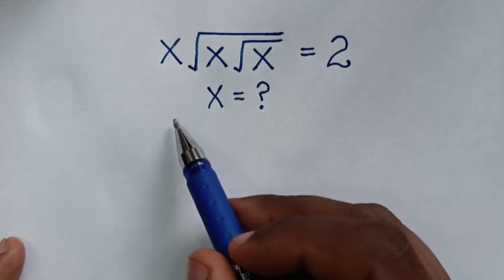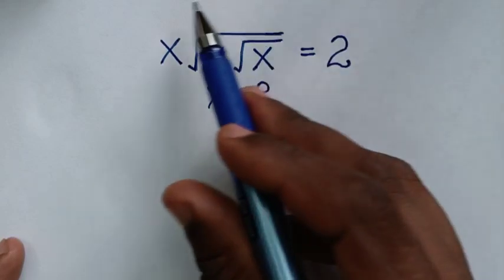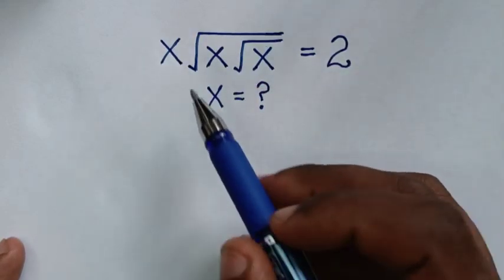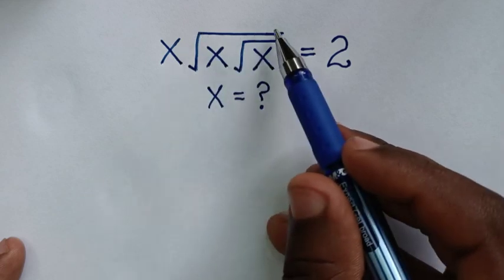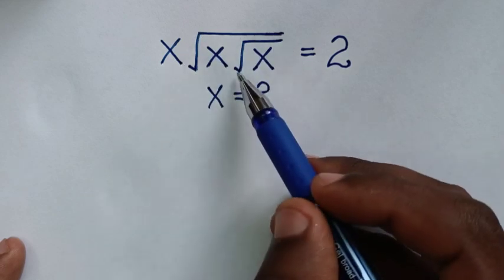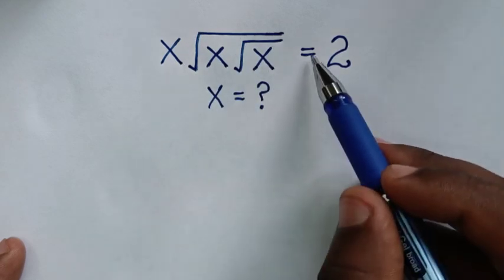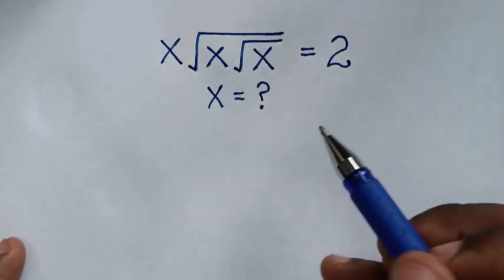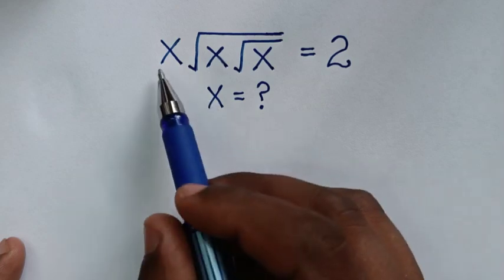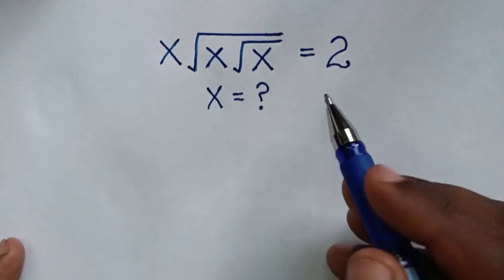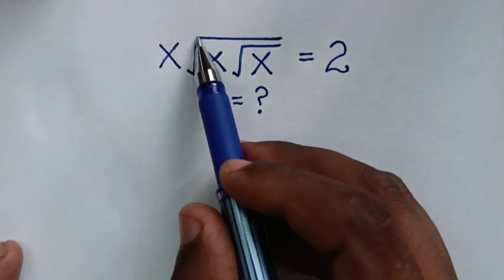Hello, you are welcome to solve this math problem which is x square root of x under square root of x is equal to 2, to find the value of x from this equation. Now in the first step, to remove this square root here, we will square both sides.